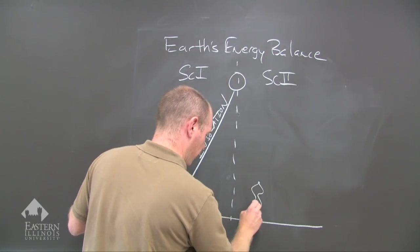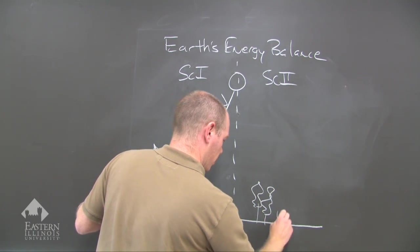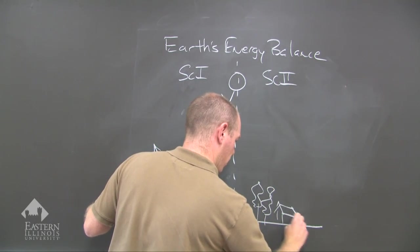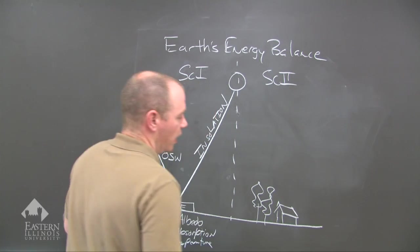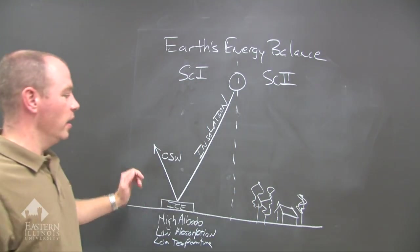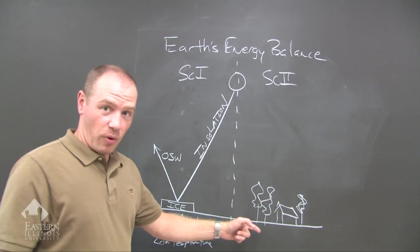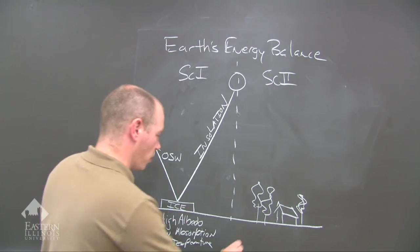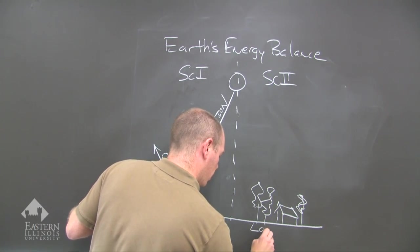Down here at the surface, we have some trees, we have a house or structure of some sort, and more trees. So now we have, at this point, we know that it's the opposite, so we go ahead and put low albedo.